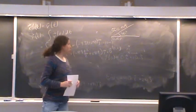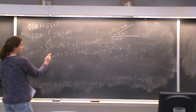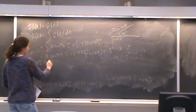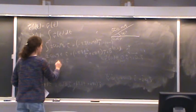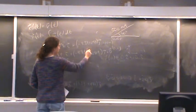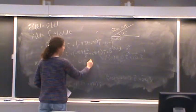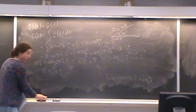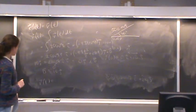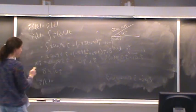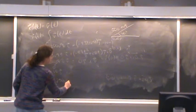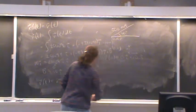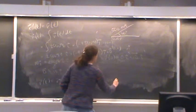Solving for d using the initial condition: r(0) = 10j. Plugging in t = 0: 250√3(0)i + (all terms with t go to 0)j + d = 10j, so d = 10j. Finally, I have an equation for my position: r(t) = 250√3 t i + (−9.8t²/2 + 250t + 10) j.